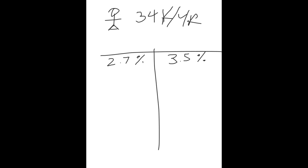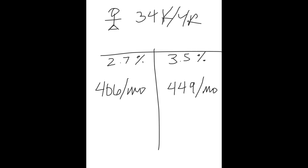If you type into a mortgage calculator with a loan amount, 30-year fixed, and an interest rate: for a $100,000 home — the average home isn't $100,000 but let's use that for Sally — at a 2.7 percent interest rate, Sally would pay $406 a month over 30 years. Change only the interest rate to 3.5 percent and Sally pays $449 per month.